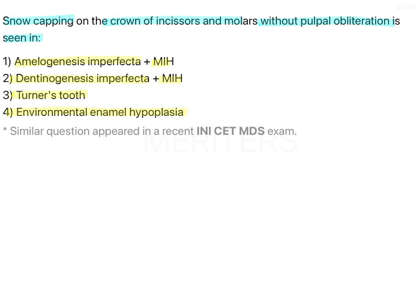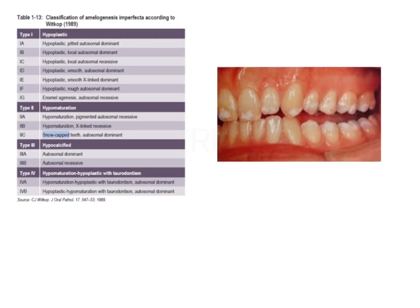Snow capped teeth look like this — there is a frosty appearance on the incisors, as you can see in the image, which is characteristic of amelogenesis imperfecta.